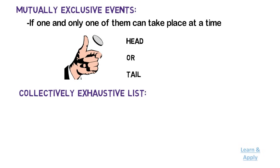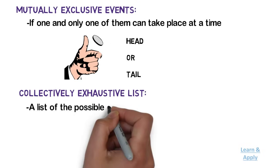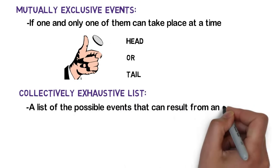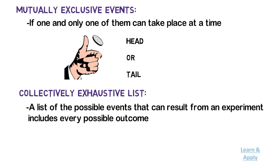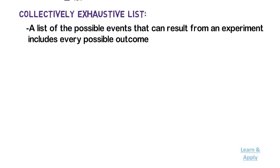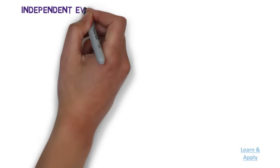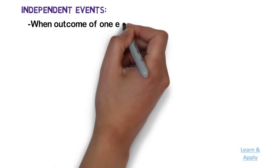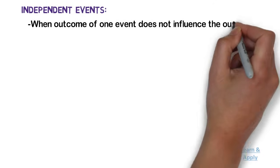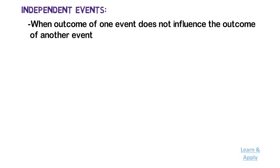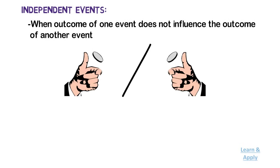Collectively Exhaustive List: when a list of the possible events that can result from an experiment includes every possible outcome, the list is said to be collectively exhaustive. In our example, the list {head, tail} is collectively exhaustive. Independent Events: when the outcome of one event does not influence the outcome of another event, the two events are called independent events. In our example, the outcome of first tossing and second tossing are independent.